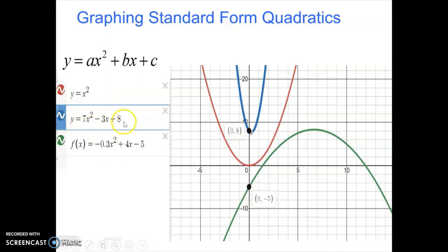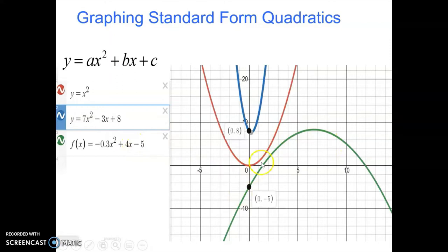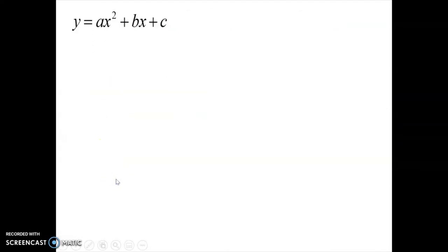Now let's take a look at the c values — we'll ignore the b values for now. There's a c value of 8 on the blue parabola, and notice where the parabola hits the y-axis is at 0, 8. Over here, the c value is negative 5, and the green parabola intercepts the y-axis at 0, negative 5. So the c value tells us what the y-intercept will be. That's a reminder of some key things we've already learned.